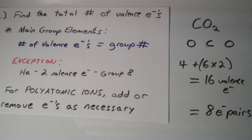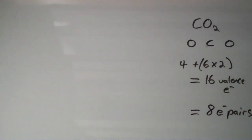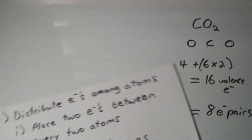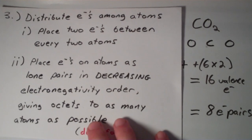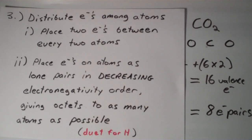Okay, so now we have to move on to the next step, which is to distribute the electrons among the atoms. And the way that we distribute the electrons among the atoms is, first, place 2 electrons between every 2 atoms.